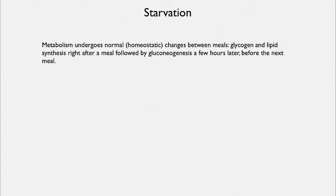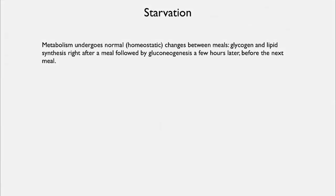So, starvation. Our normal metabolism undergoes changes between meals. Glycogen and lipid synthesis happen right after a meal, and then a few hours later there's gluconeogenesis before the next meal. This is a method of keeping circulating nutrients in the blood on an even keel when meals are coming in in pulses.